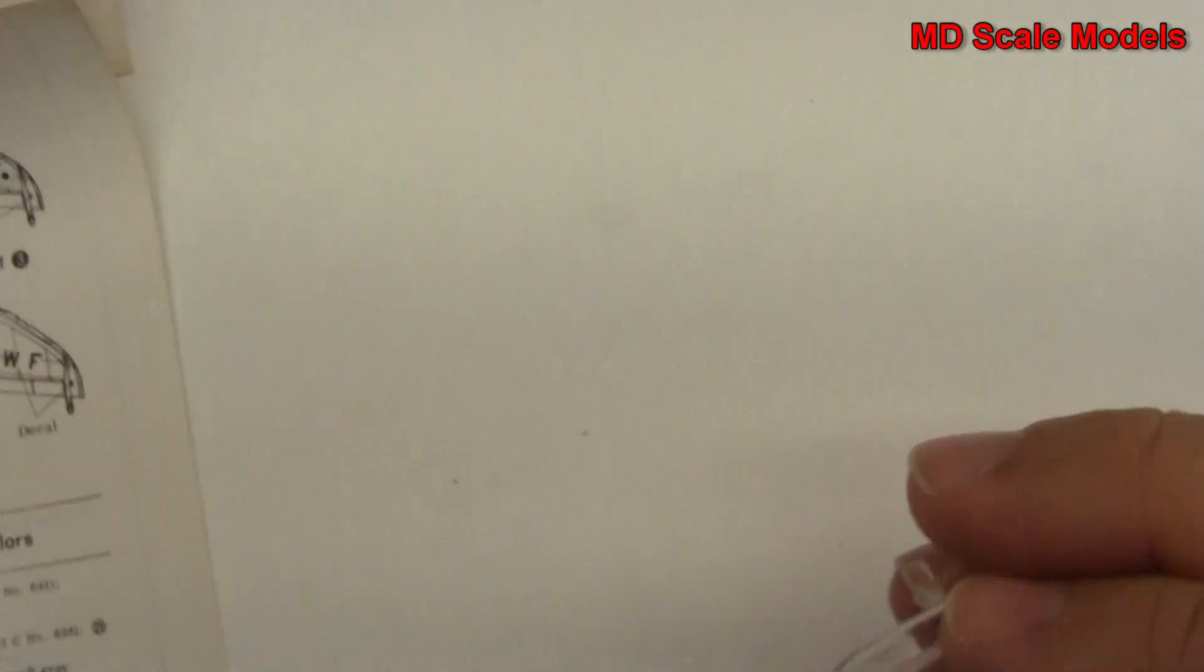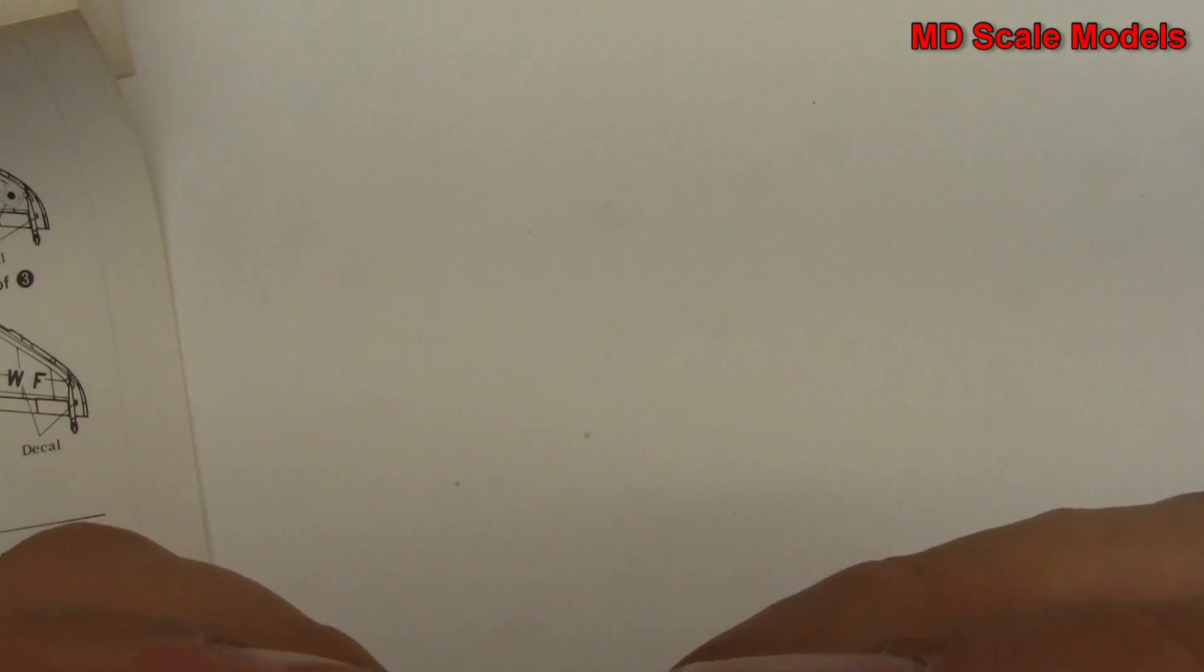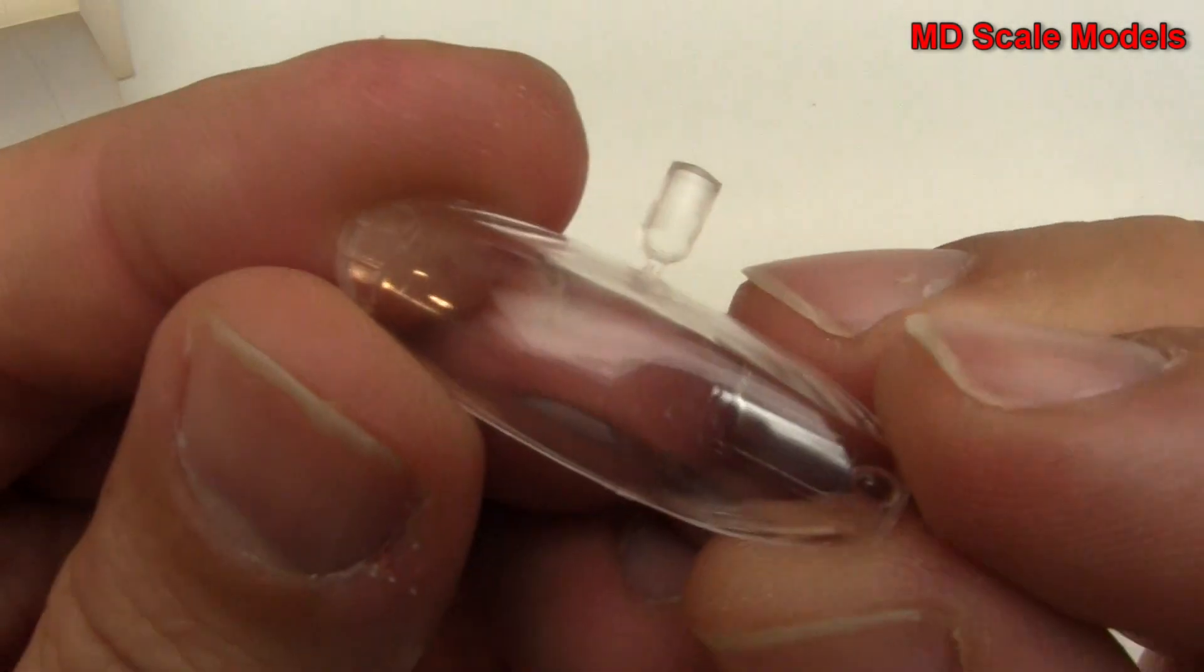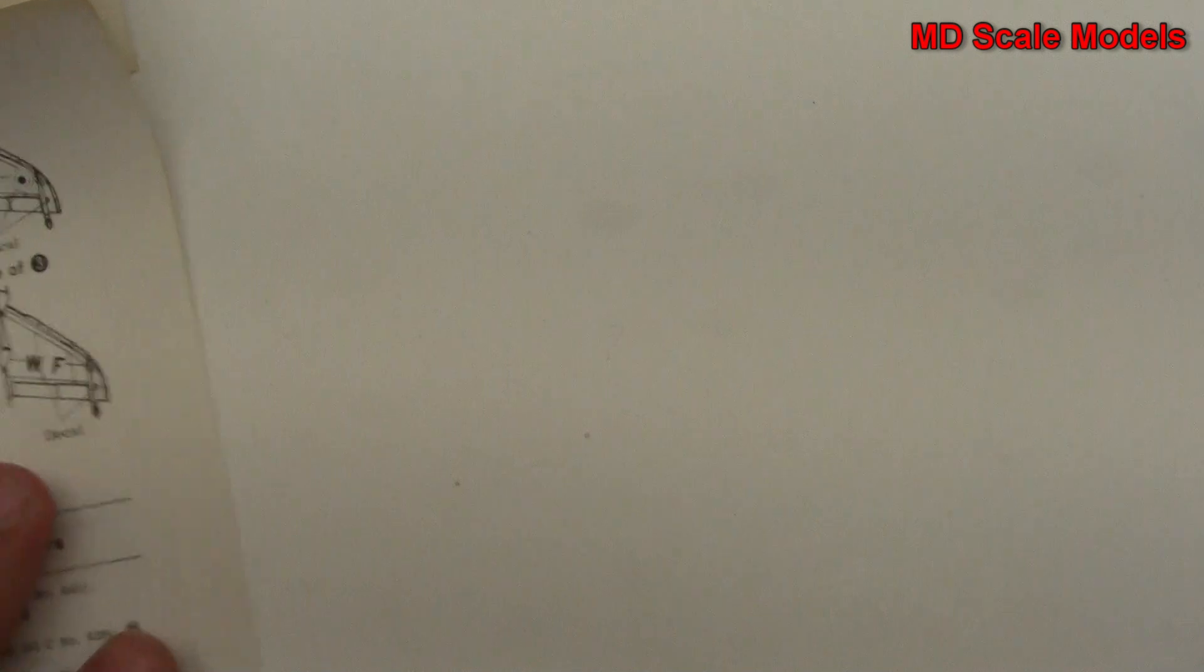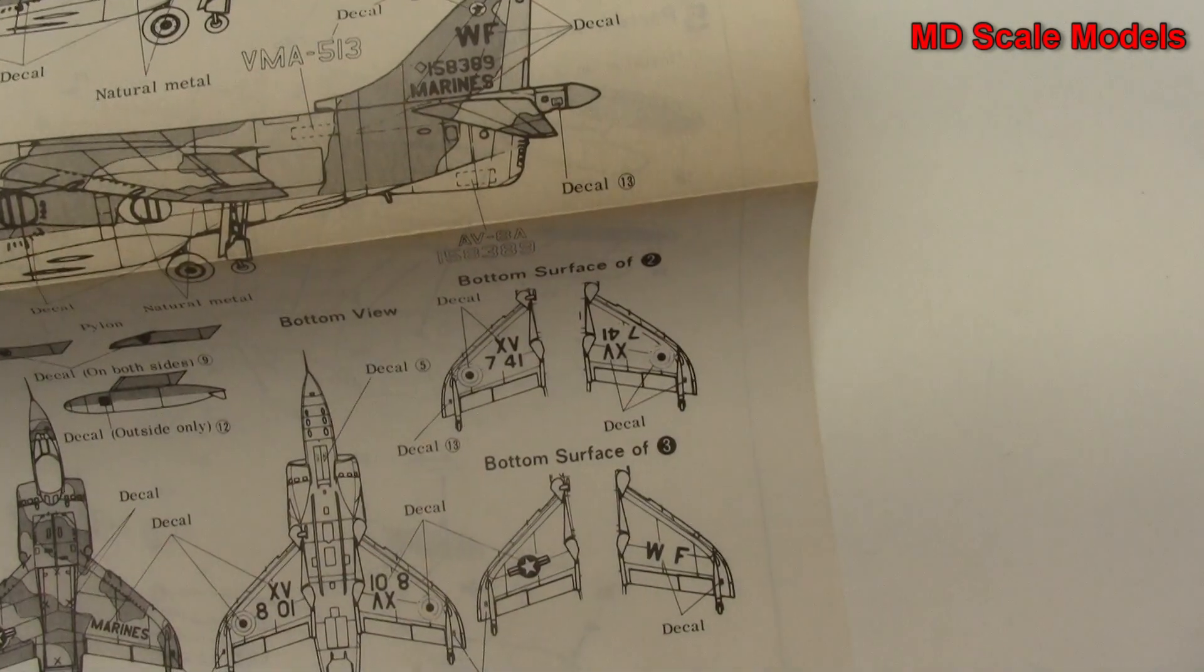Here is our canopy with the windshield molded in. So all in all, quite a few parts, not bad. It's an older model, decals really aren't too bad either.